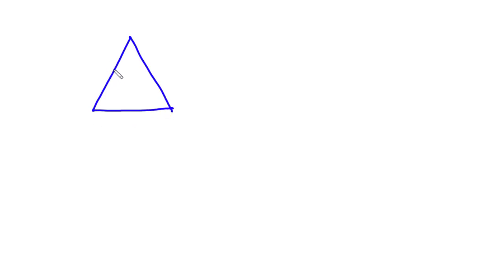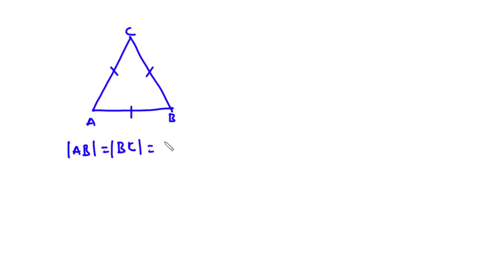Now let's talk about an equilateral triangle. An equilateral triangle is a triangle which has all three sides equal. So AB equals BC equals AC, and each of the angles is 60 degrees.